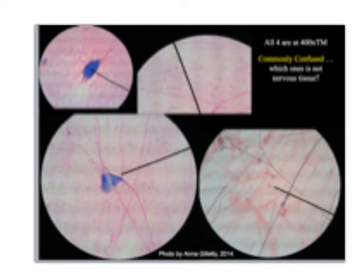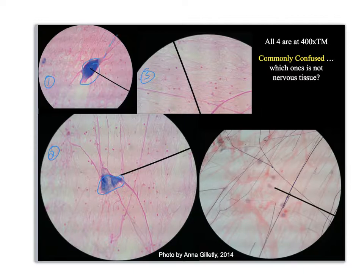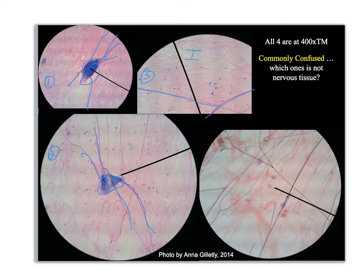On this side, I have three pictures of nervous tissue. You can see here is a giant multipolar neuron, here's another one with its cytoplasmic processes going off of it. Over here in number three, you see some cytoplasmic processes, you've got some glial cells, and then all of this is your interstitium or your extracellular fluid.